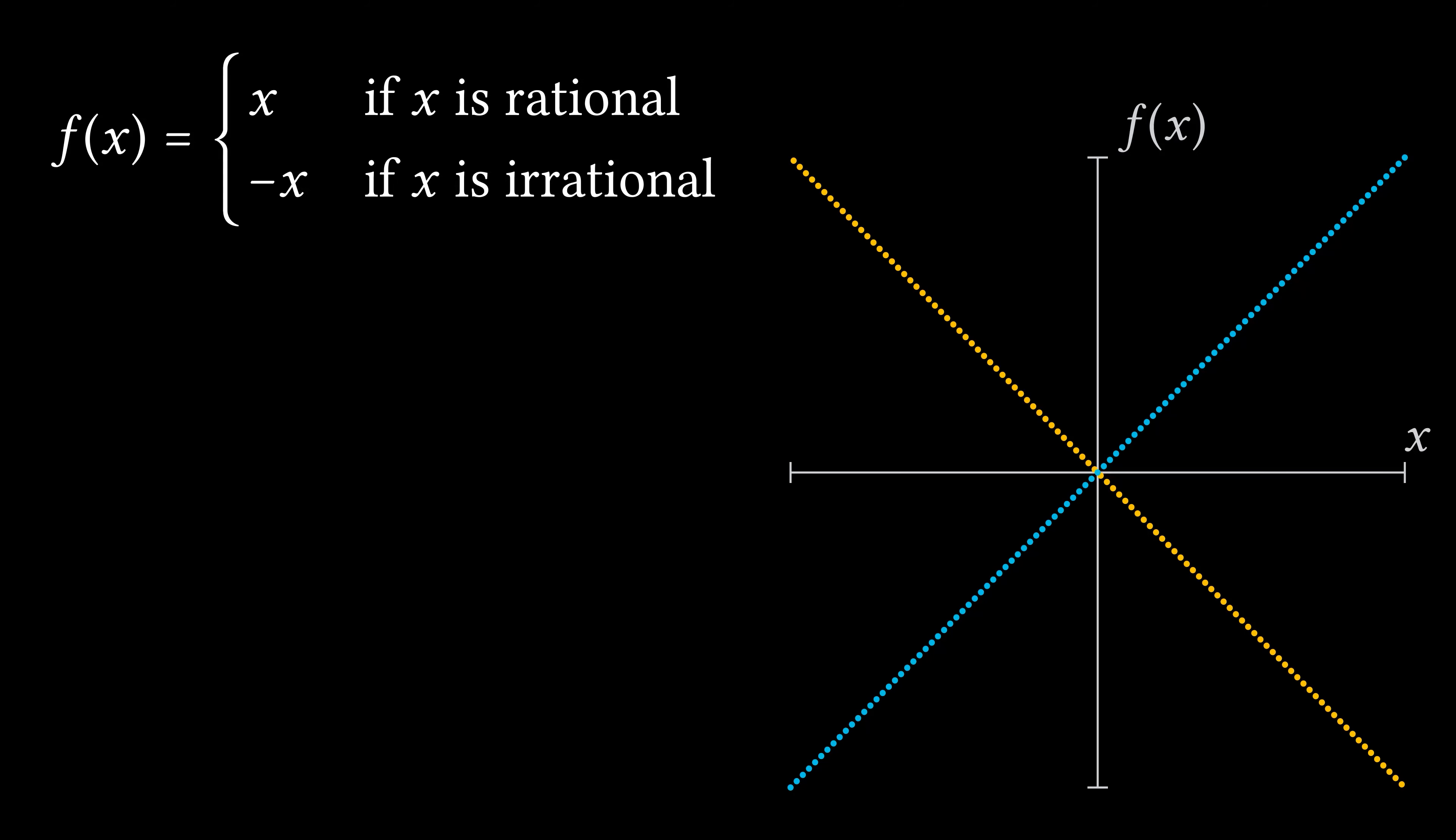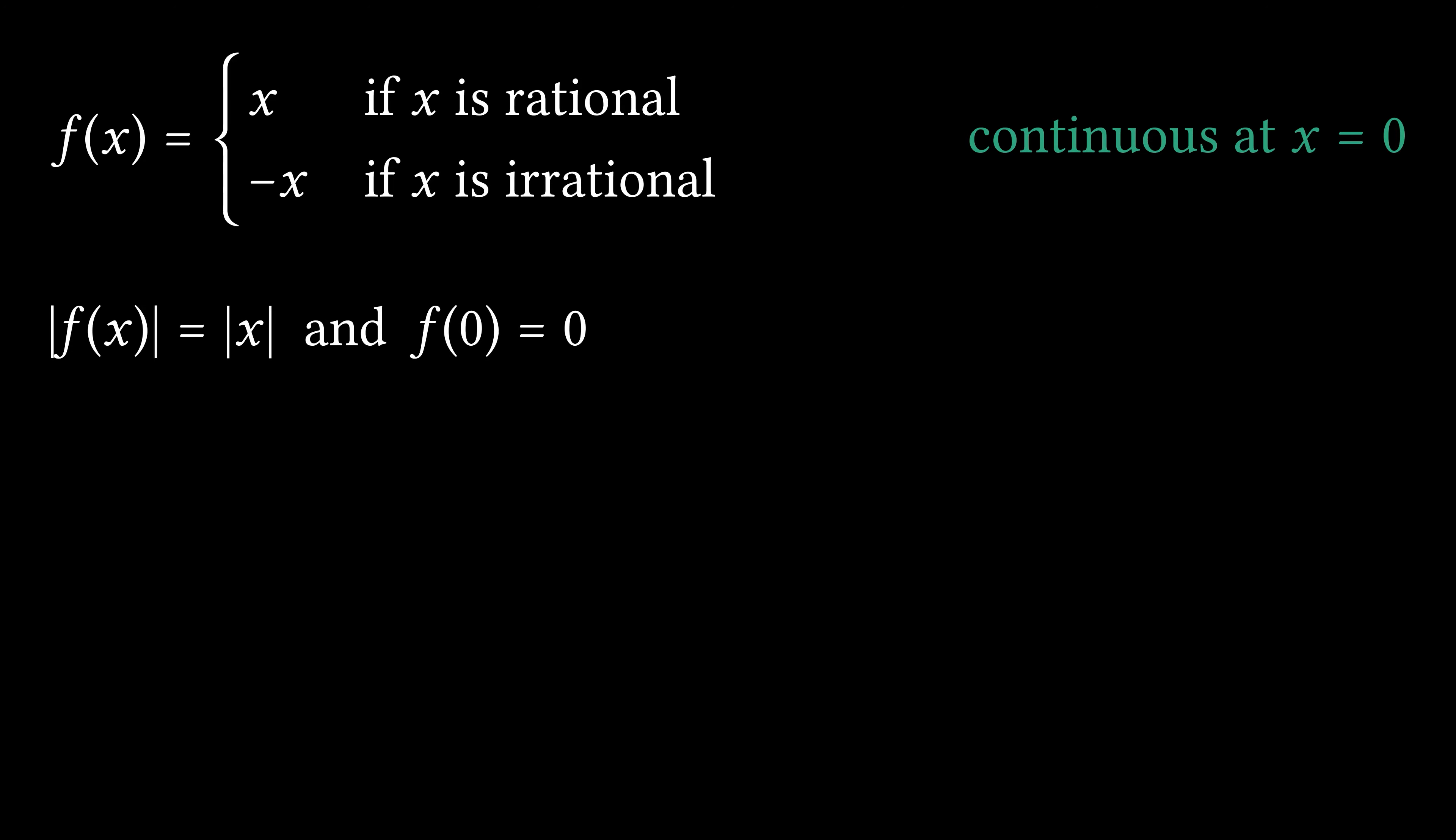Let's construct a rigorous proof. The function is continuous at zero. To prove this, observe that the absolute value of this function is the absolute value function, and that the value of the function at zero is zero.